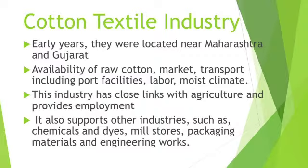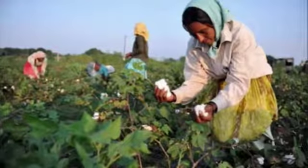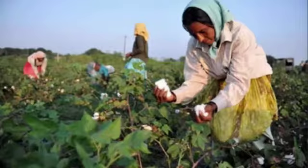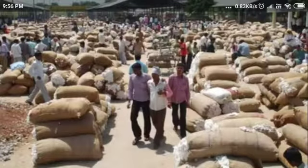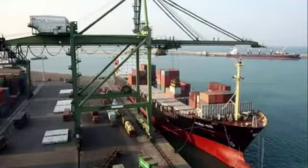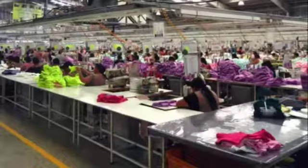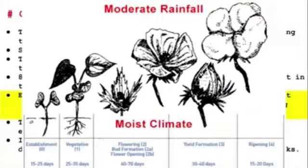Initially, textile industries in India were concentrated in the cotton-growing belts of Maharashtra and Gujarat. The reasons were: availability of raw material (cotton), market and transport facilities, port facilities, labor — both local and migrant — and a moist climate ideal for the growth of cotton. All these reasons supported the growth of cotton textile industry in Gujarat and Maharashtra.